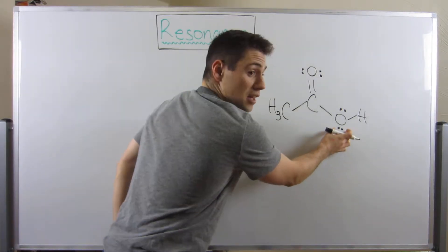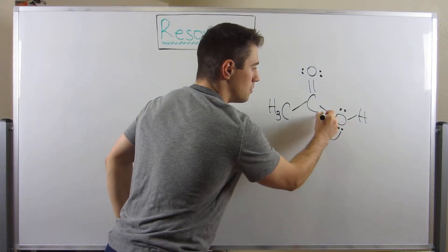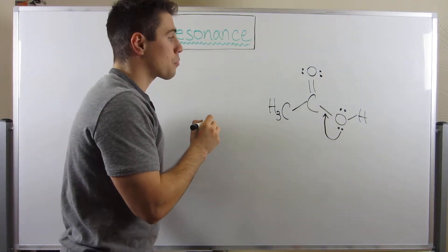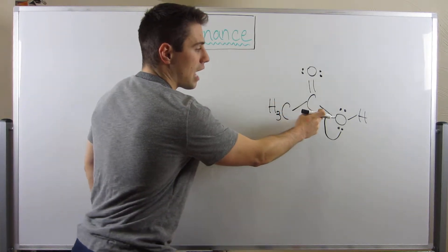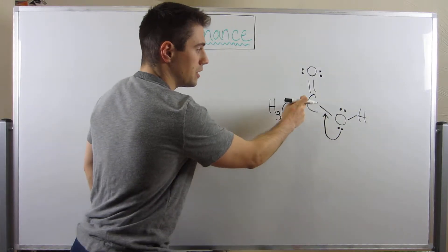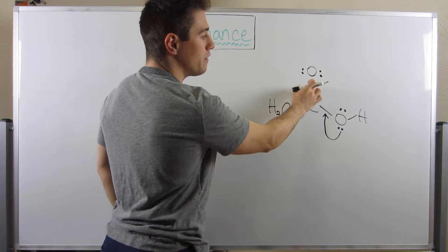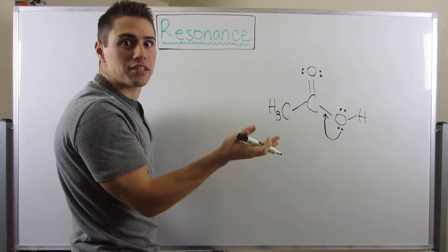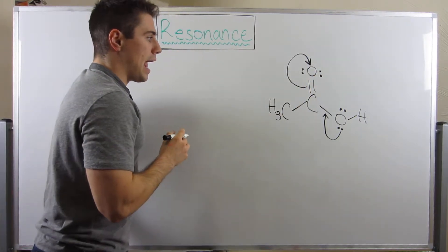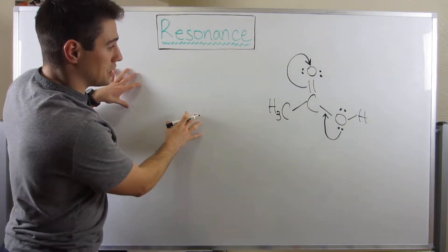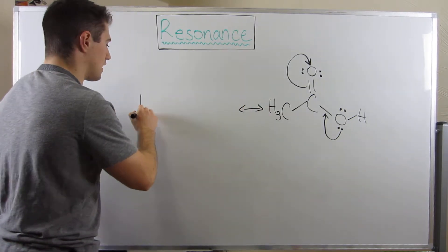If I were to take this electron pair and move it to make a double bond right here — drawing a double-headed arrow showing where it's going — I kind of have to move a bond. Otherwise, I'm going to break the octet rule for this carbon because I'd have five bonds. So I'm going to take one of these bonds, comprising two electrons, and move it up here. I'm going to draw the resultant structure over where this double-sided arrow is pointing.